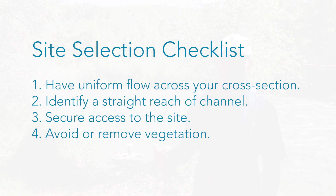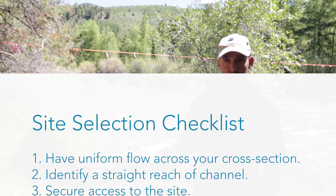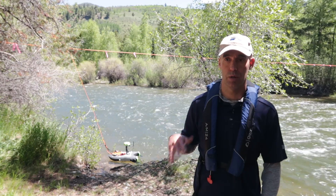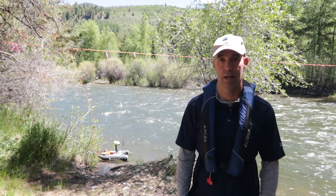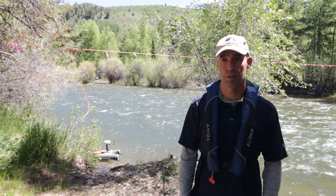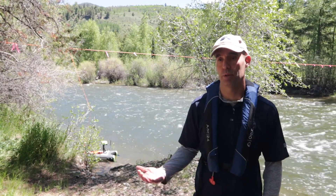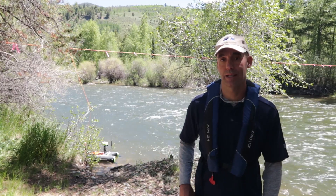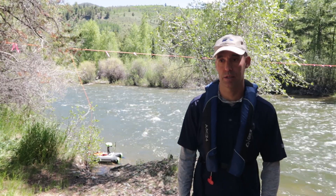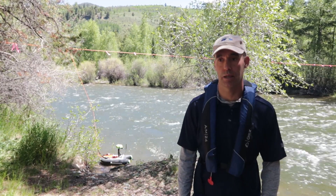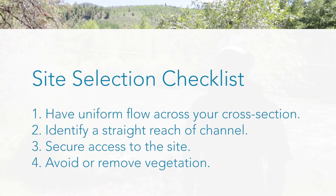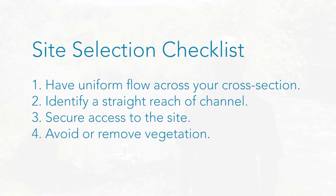We want to make sure to avoid any vegetation if at all possible. Vegetation will disrupt the flow and it's not an ideal place to measure. You may have to periodically clean a cross section if it's critical to make a very clean discharge measurement at those sites.